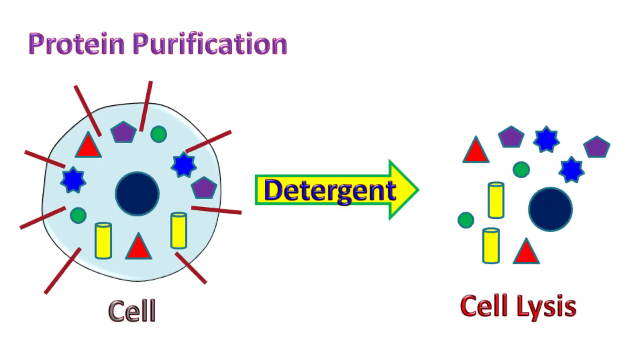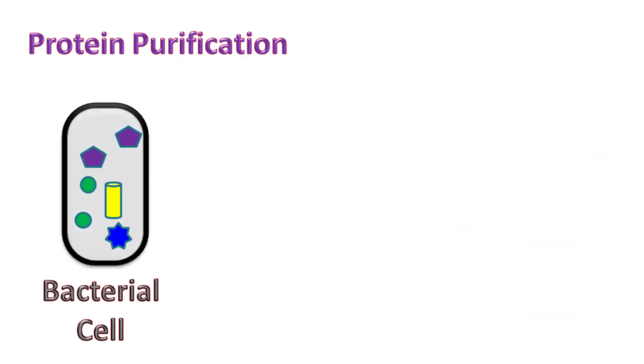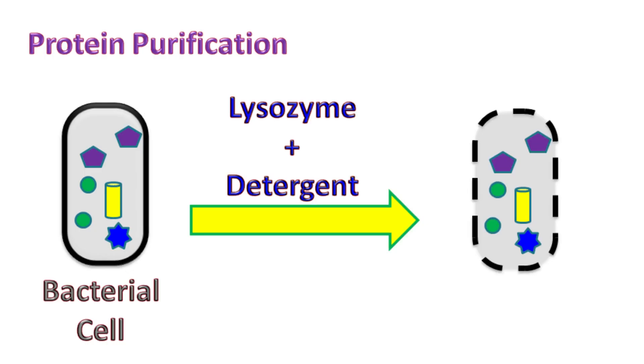In case of bacterial cells, the cells have a thick cell wall, and hence the cells are treated with enzymes like lysozyme, which degrades the bacterial cell wall.